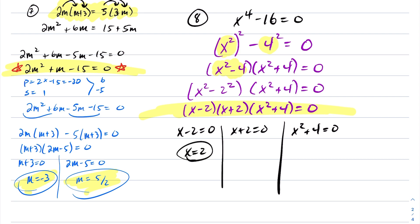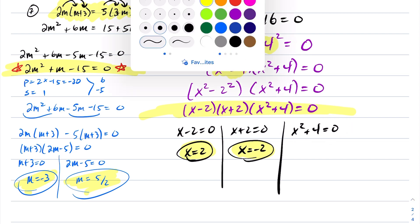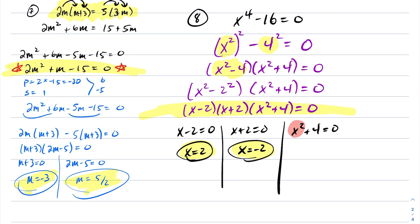We now have three terms whose product is 0. Either x minus 2 is 0, x plus 2 is 0, or x squared plus 4 is 0. The first gives x equals 2, the second gives x equals negative 2. For x squared plus 4 equals 0: x squared is always greater than or equal to 0, so adding 4 means this expression is always at least 4 — it can never be 0. So that case is not possible. Therefore this degree-4 polynomial has roots at 2 and negative 2.